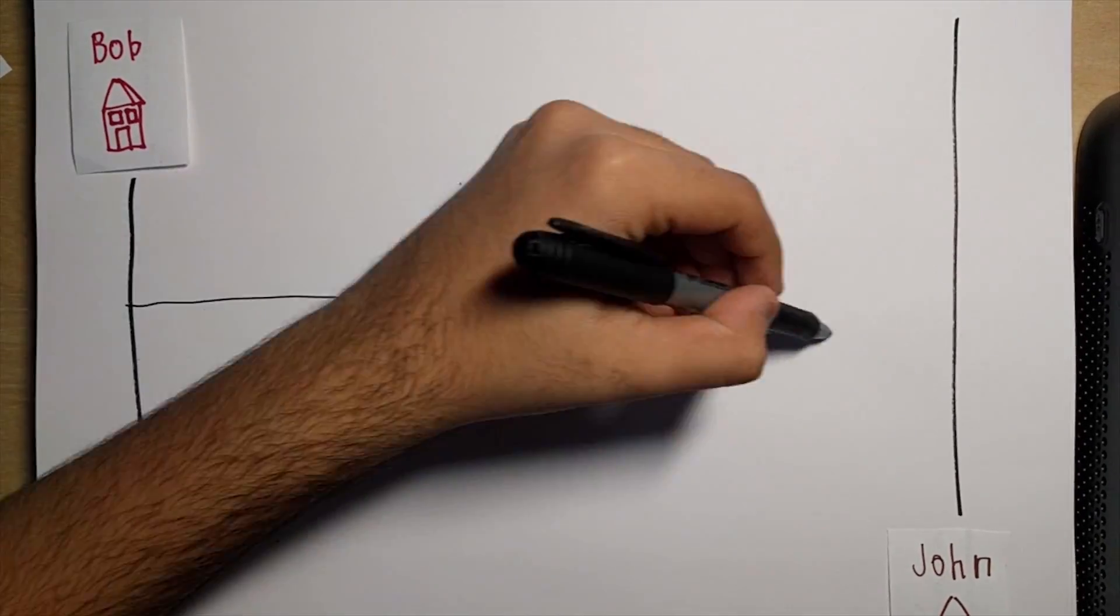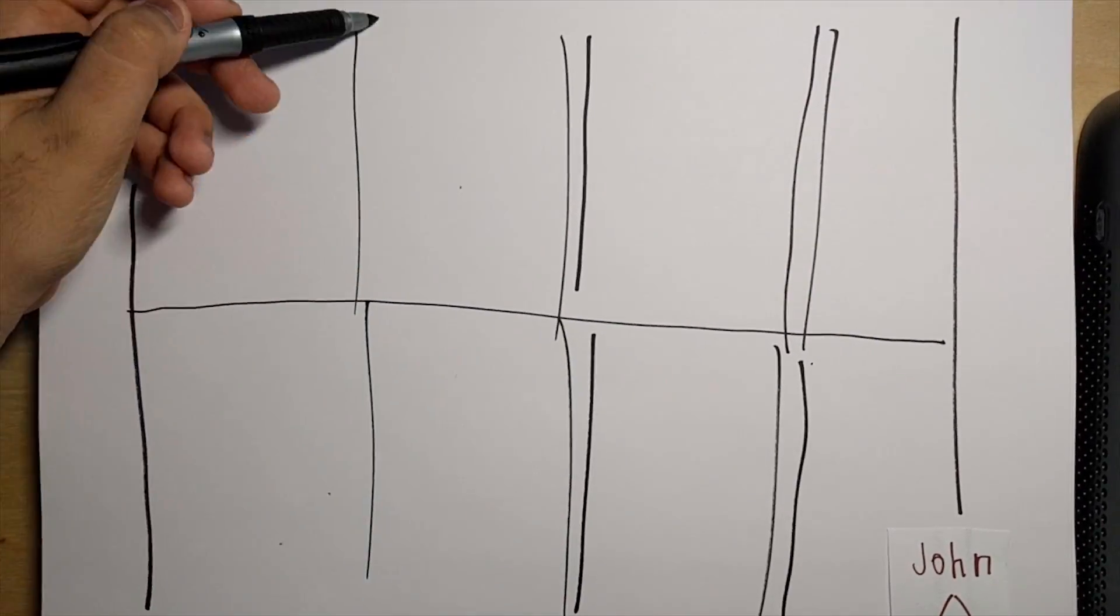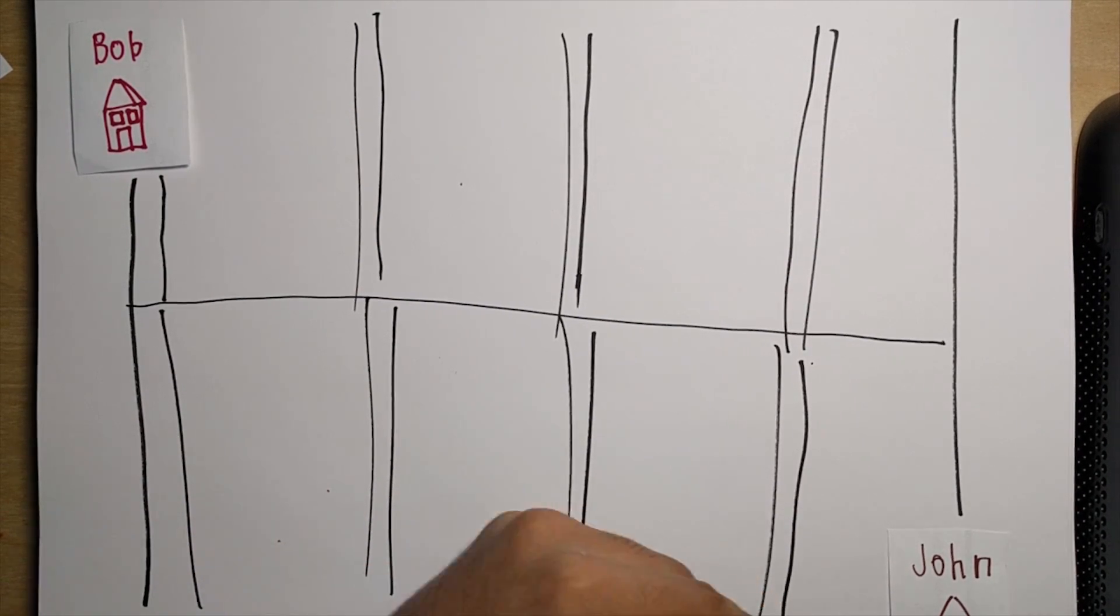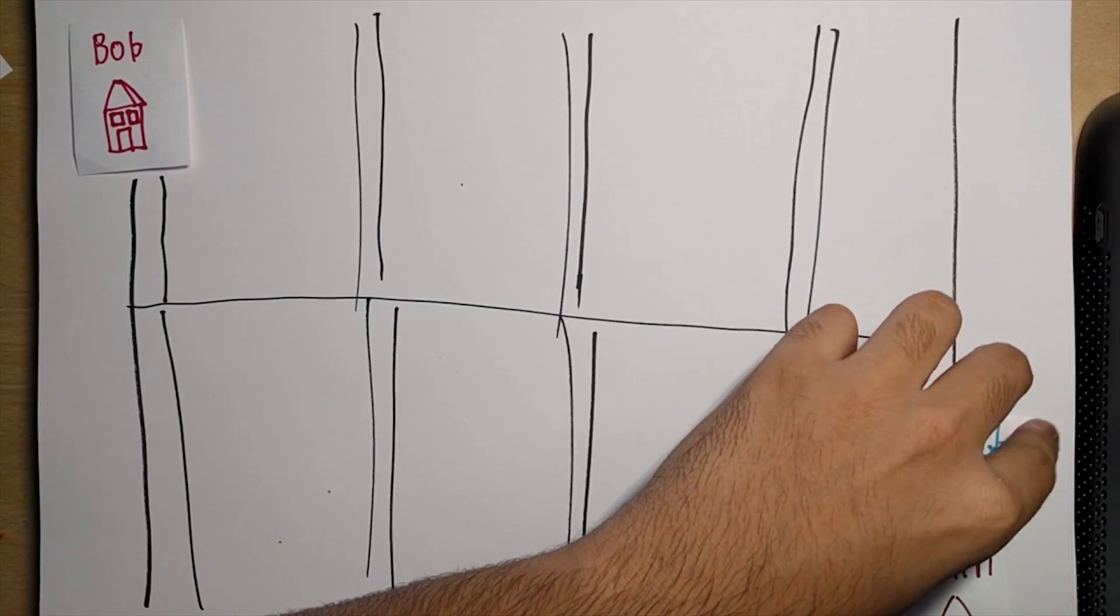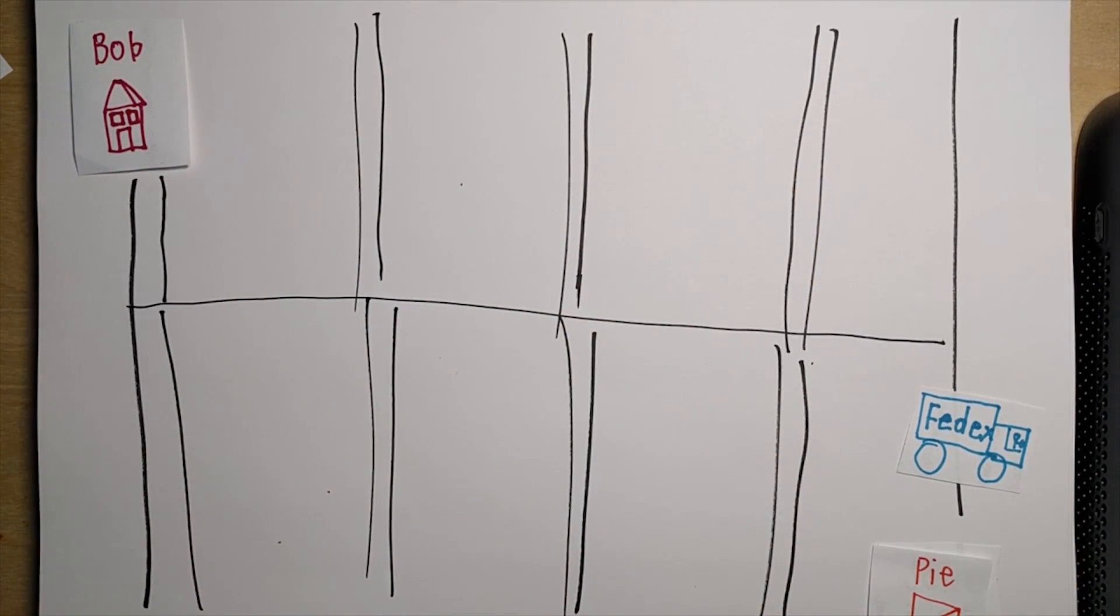Here we have Bob and John. They live in the same city, however they live 50 kilometers away. Bob wants to send some of his delicious pies to John, except he doesn't have a car or legs, so he has to have someone else deliver it for him. The mailman comes, takes his product, and delivers it to John. He's happy, so he sends a letter of thanks back to him.